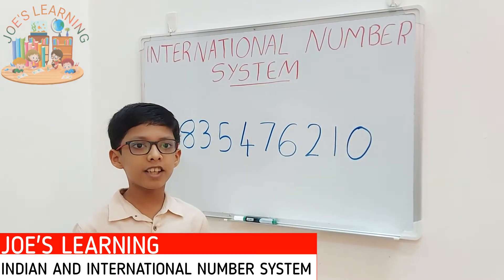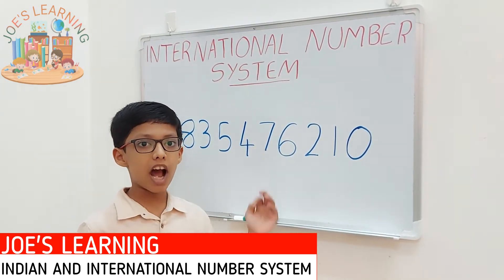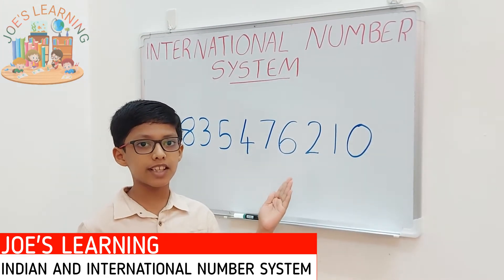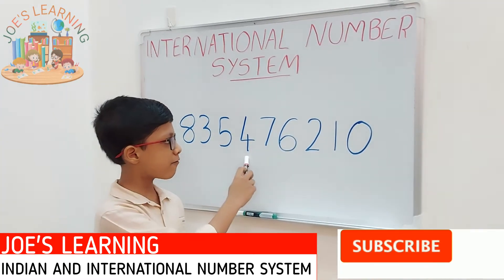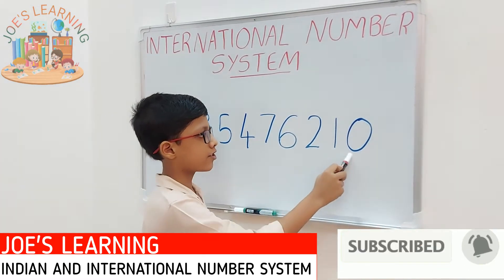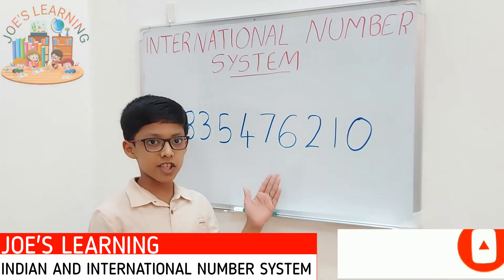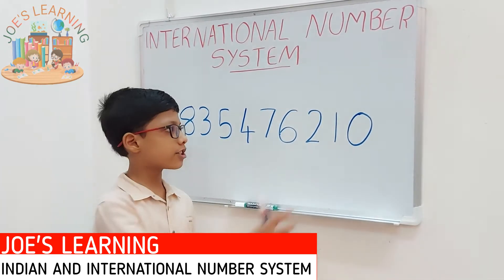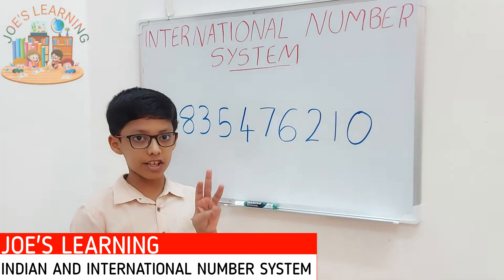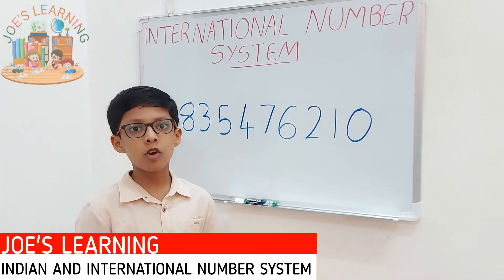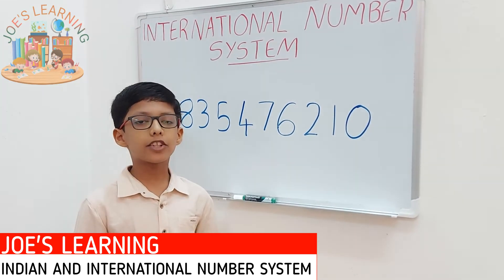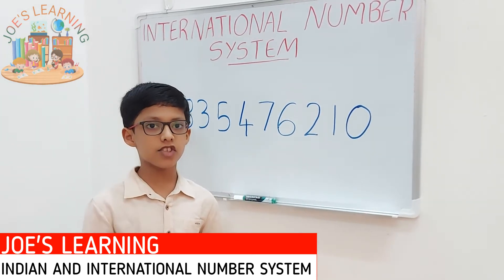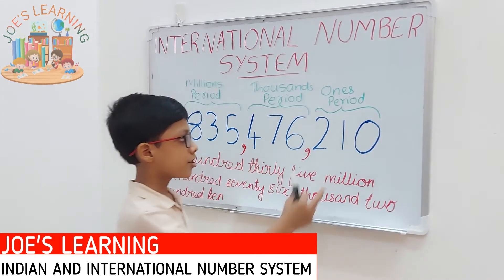Now let's move on to the international number system. If we read this number in the Indian number system, we read it as 83 crores 54 lakh 76 thousand 210. In the Indian number system, only the ones period consists of three digits while the rest consist of two digits. But in the international number system, all the periods consist of three digits.